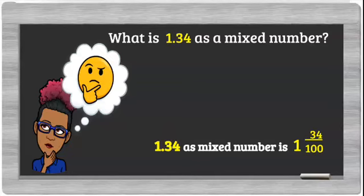So one whole, and 0.34 as a common fraction would be 34 hundredths. Two places after the decimal point, we know it's hundredths. So again, 1.34 as a mixed number is 1 and 34 hundredths.